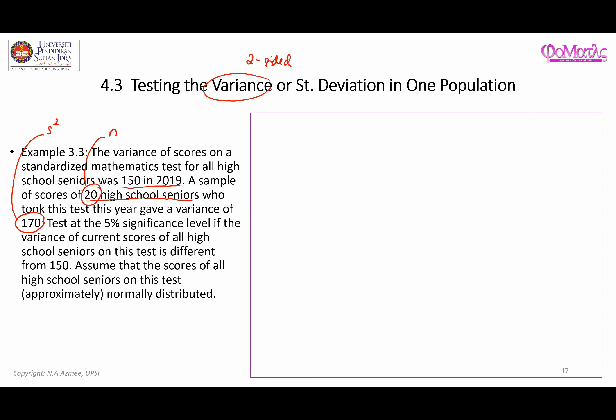We test at the five percent significance level whether the variance of current scores of all high school seniors on this test is different from 150. The keyword 'different from 150' gives an indication of the alternative hypothesis. Here, 150 is the previous result assumed to be the null hypothesis value, and 'different' means 'not equal to,' indicating this is the alternative hypothesis.